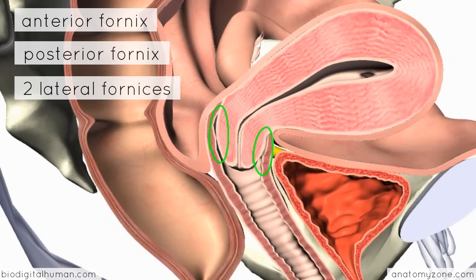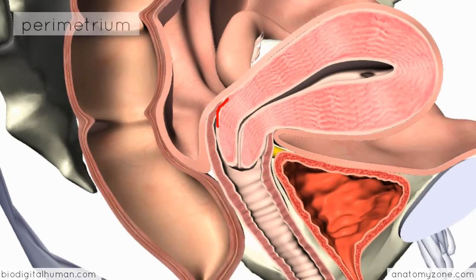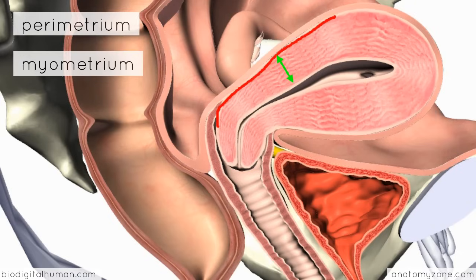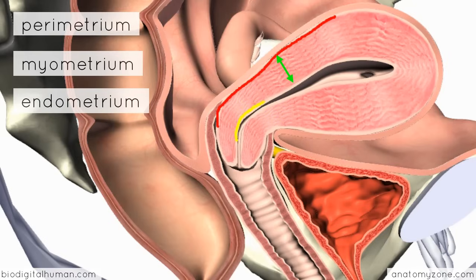In terms of the layers of the uterus, you've got an outer connective tissue layer called the perimetrium. Then there's a thick middle layer of smooth muscle — this is important during labor for contraction. Lining the cavity of the uterus is the endometrium, and the muscle layer is called the myometrium. The endometrium, which is the internal mucosal layer, thickens during the menstrual cycle and disintegrates at the onset of menstruation. It's under hormonal influence and varies in thickness during the cycle.